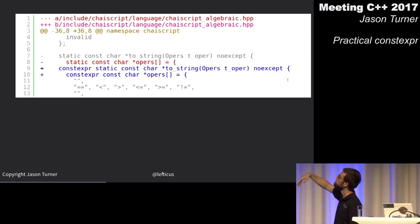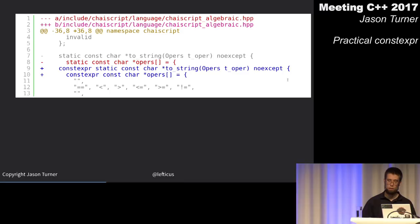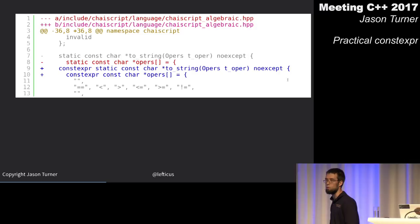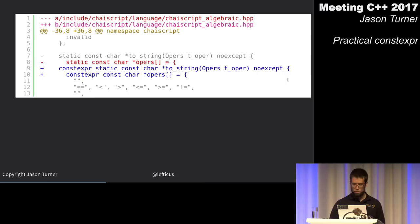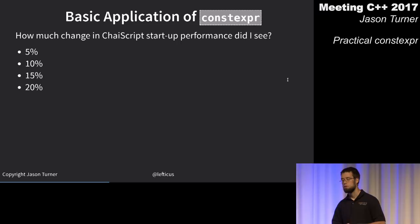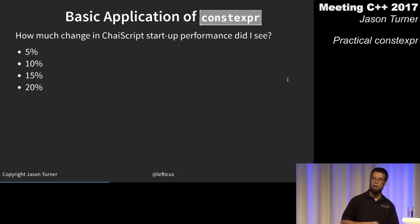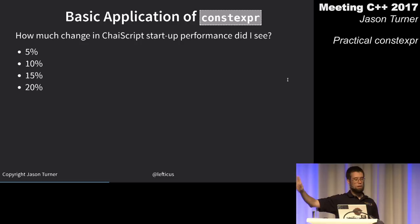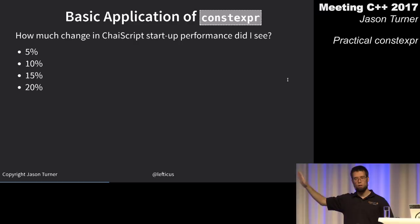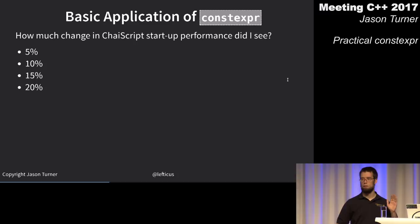I went through the whole codebase doing this kind of thing, sprinkling constexpr around where it didn't require modifying the code at all. You might logically think constexpr would help startup time — it involves building data structures and parsing the ChaiScript standard library. Who thinks this gave a 5% performance improvement in startup time?